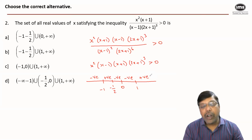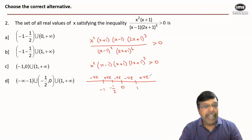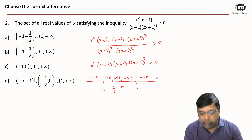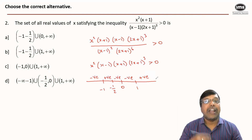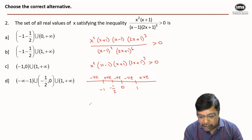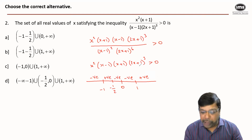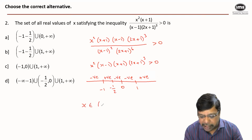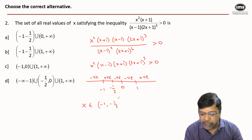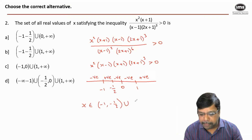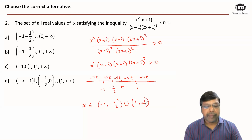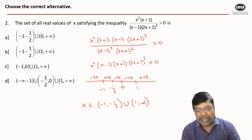Since I want the expression to be greater than 0, from what we have calculated I can determine that for the inequality to be true, x must lie in (-1, -1/2) union (1, ∞). Hence the answer is option B.